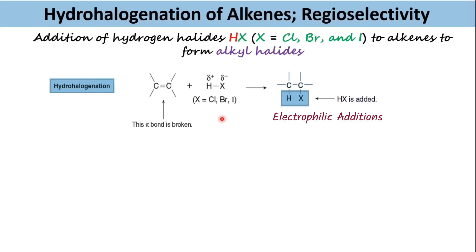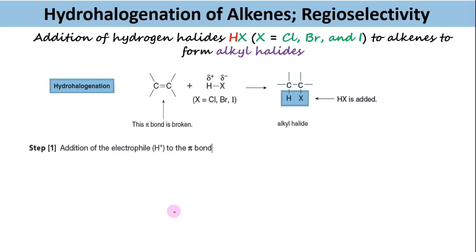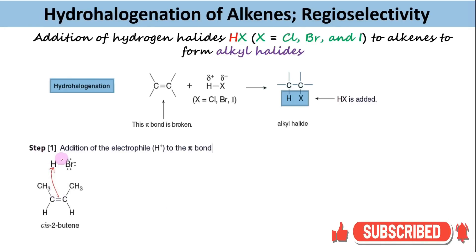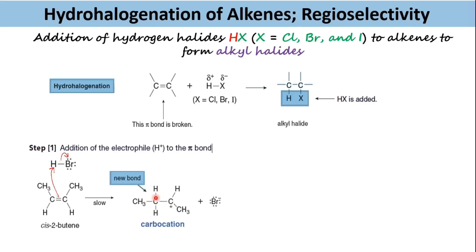Let us check the mechanism this addition reaction goes through. The mechanism consists of two steps. Step 1 is the addition of the electrophile to the pi bond. The loosely held pi electrons attack the hydrogen atom of HBr, thus forming a new C–H bond, while breaking the HBr bond towards electronegative bromine. Due to this, the other carbon atom of the original double bond is left with only six electrons, forming a carbocation intermediate.